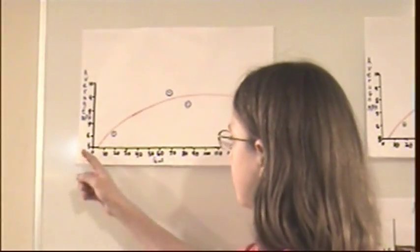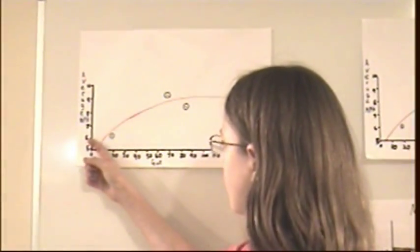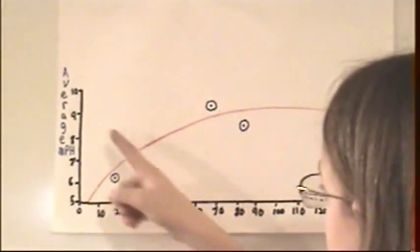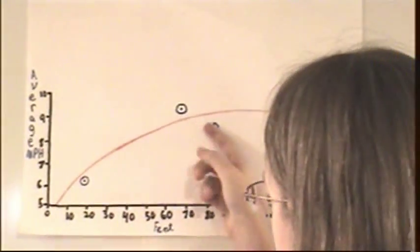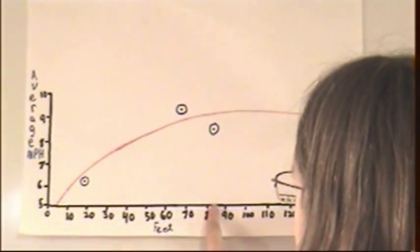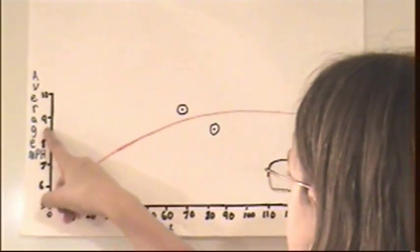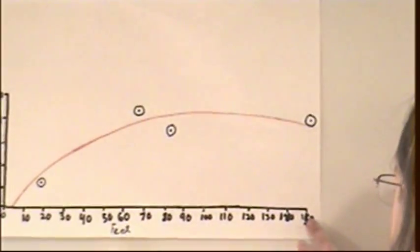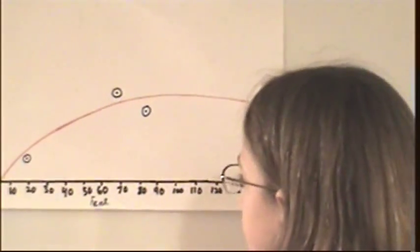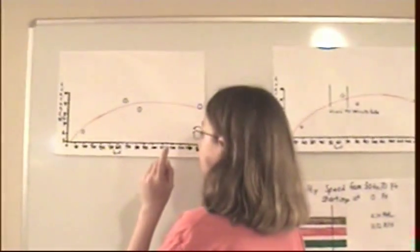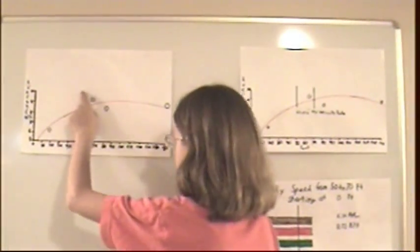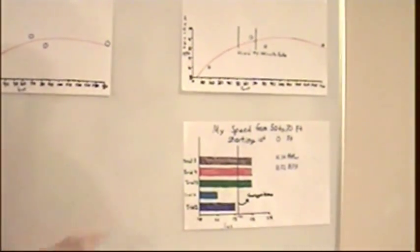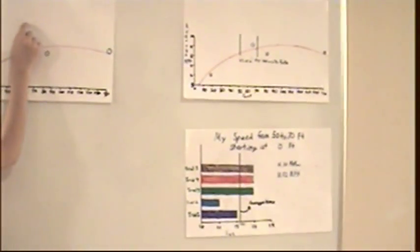I now know if I go from 0 to 18 feet, I can go 6 miles per hour. And if I go from 0 to 68 feet, I can go 9.3 miles per hour. If I go from 0 to 84 feet, I can go 8.8 miles per hour. And if I go from 0 to 150 feet, I can go 9.1 miles per hour. But I know that my peak is faster, which is 11.2 miles per hour.